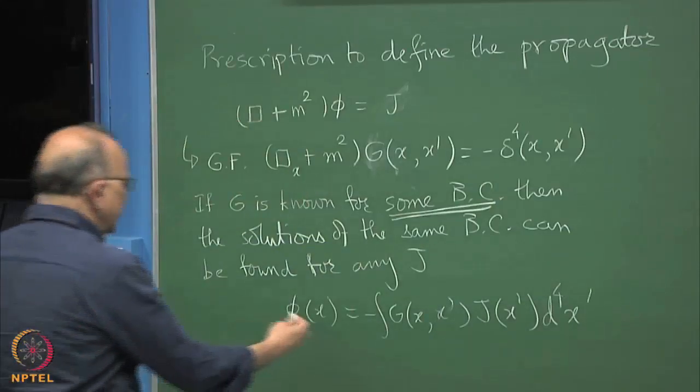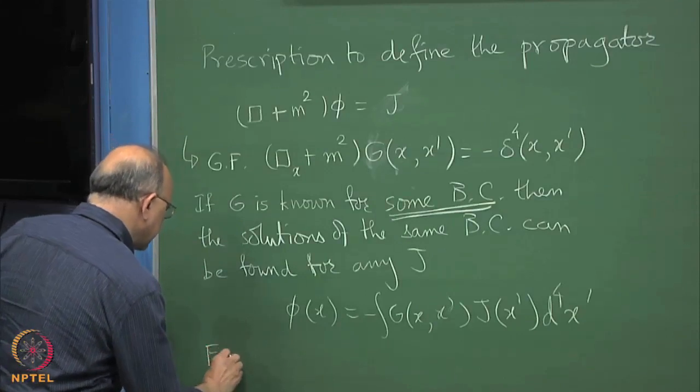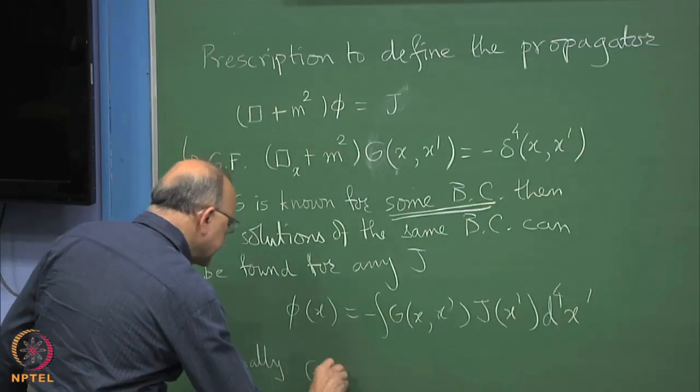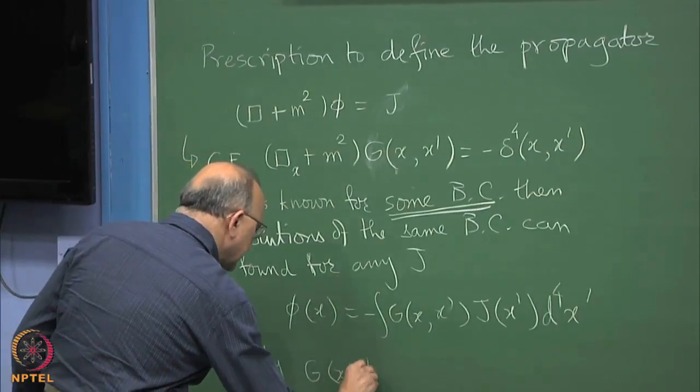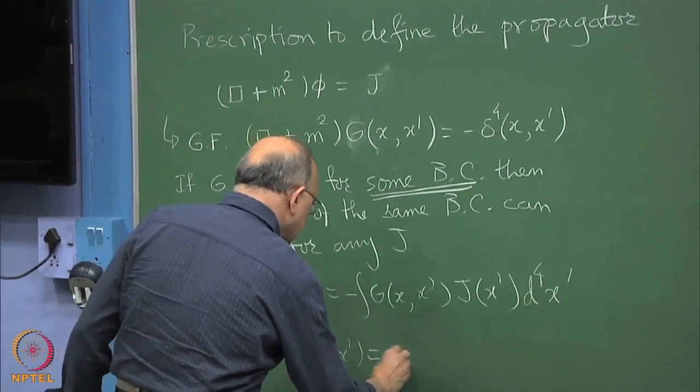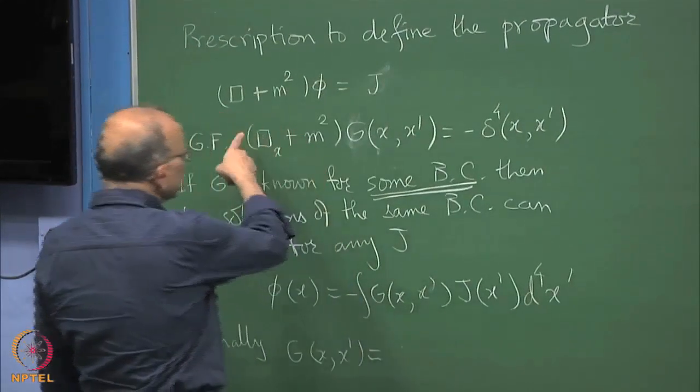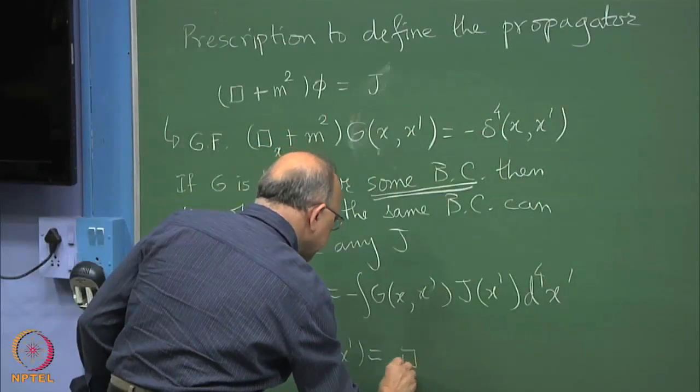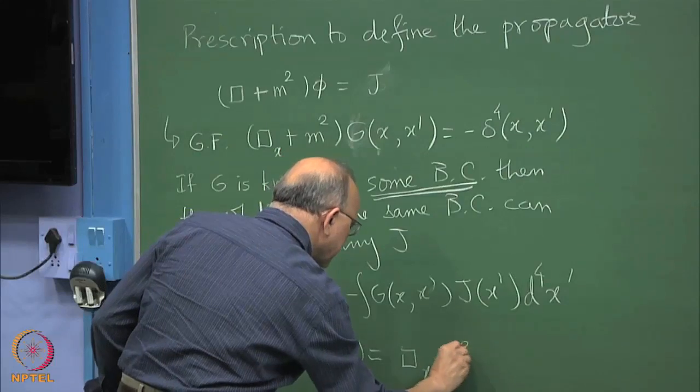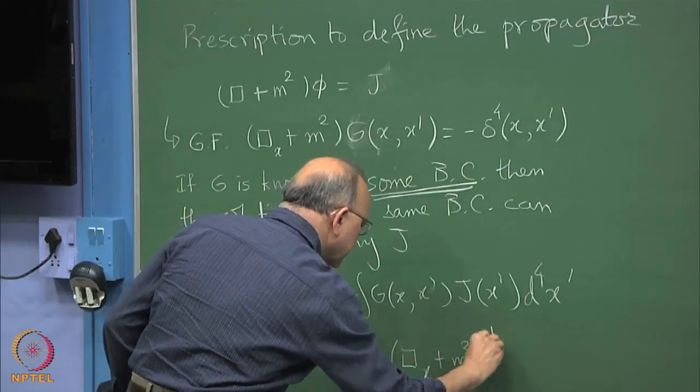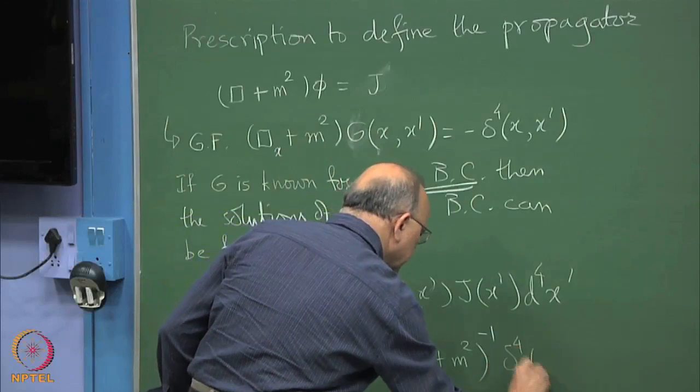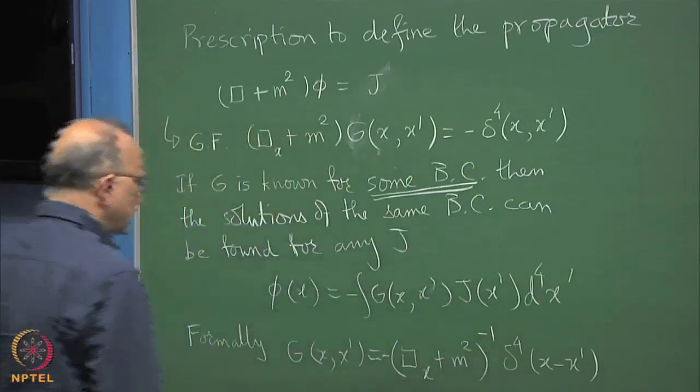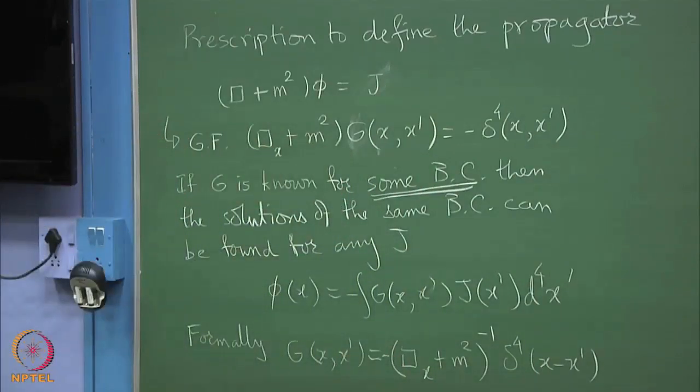Formally G is simply equal to G of x, x prime, which is just the inverse of this operator, whatever acts on this. So formally it is inverse of this operator.